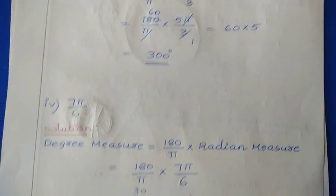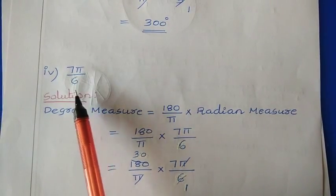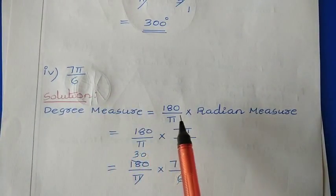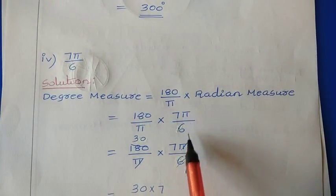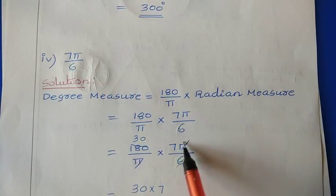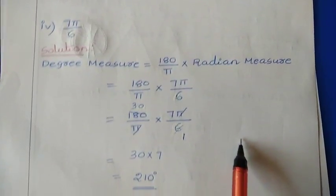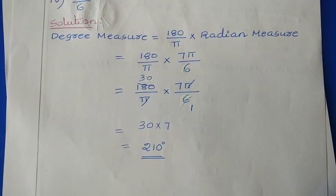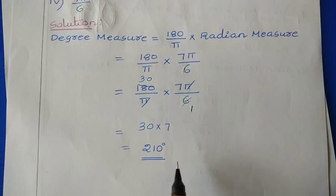Fourth question: 7π/6. This is also easy since we have π. Degree measure = (180/π) × (7π/6). π cancels, and 180/6 = 30. So: 30 × 7 = 210 degrees. Here we get the answer as 210 degrees. This completes Exercise 3.1, question number 2.